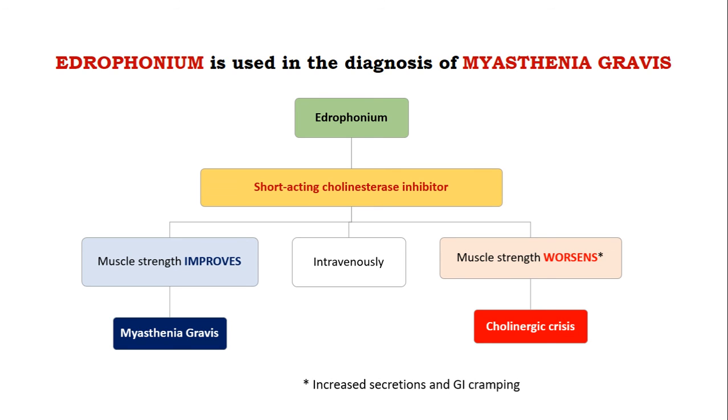In the case of cholinergic crisis, there will be increased secretions as well as GI cramping.